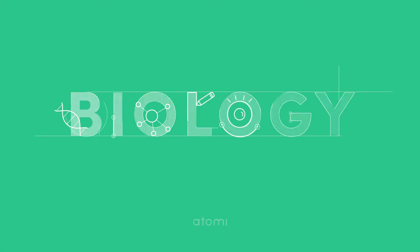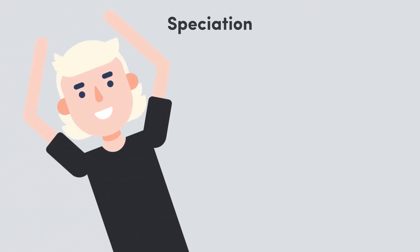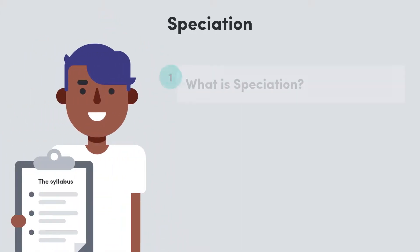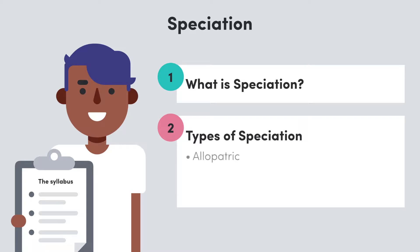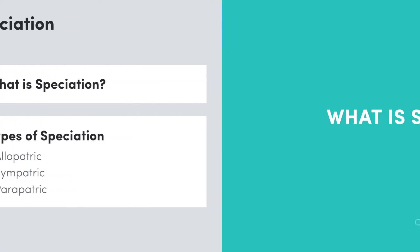Hey there bio team! In today's video we're going to be covering the process of speciation. Speciation is one of the key concepts of evolution and it's pretty cool because it allows all sorts of weird and wacky creatures to develop. In this video we'll discuss what speciation is with a little example, then we'll have a look at the different types of speciation that exist: allopatric, sympatric and parapatric. Let's get started.